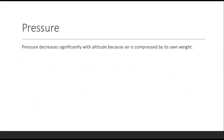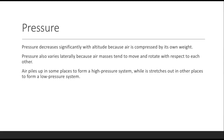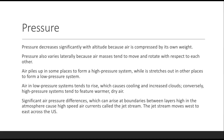Pressure decreases significantly with altitude, just like temperature, because air is compressed by its own weight. Pressure also varies laterally — side to side — because air masses tend to move and rotate with respect to each other. Air piles up in some places to form a high-pressure system, and stretches out in other places to form a low-pressure system. Air in low-pressure systems tends to rise, causing cooling and increased clouds. Conversely, high-pressure systems tend to feature warmer and drier air. Significant air pressure differences can cause high-speed air currents called the jet stream.